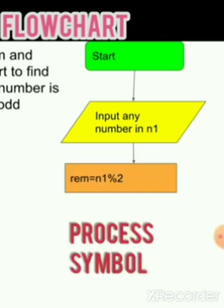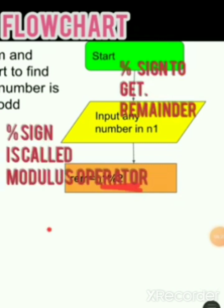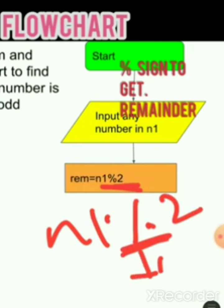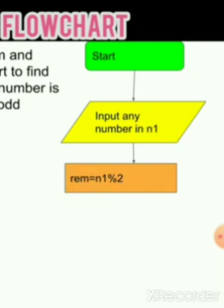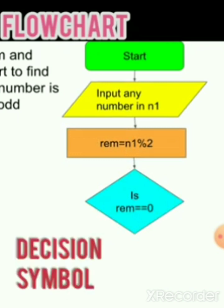In the third step of the flowchart, we calculate the remainder using n1 % 2, which is the modulus operator represented by the percentage sign. Whatever remainder we get is stored in the variable 'rim.' You can give any name to this variable.